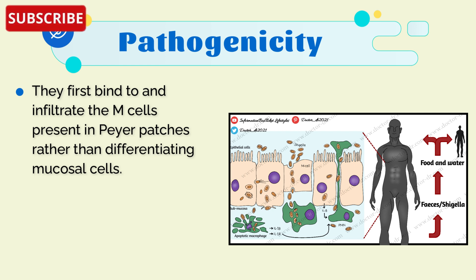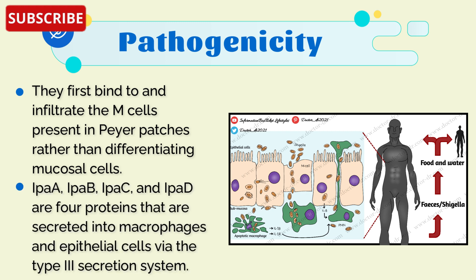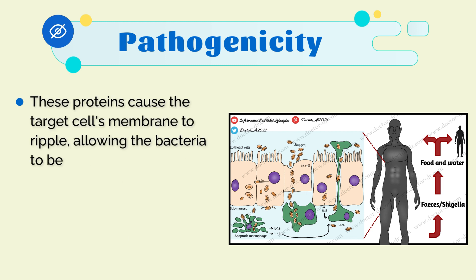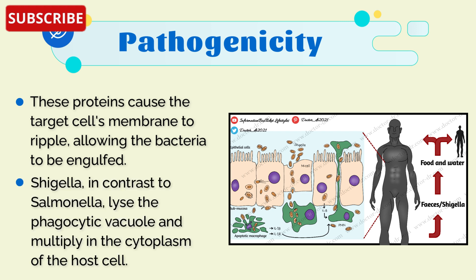Therefore, the plasmid's existence does not guarantee that genes are functioning. They first bind to and infiltrate the M cells present in Peyer's patches rather than differentiating mucosal cells. IpaA, IpaB, IpaC, and IpaD are four proteins secreted into macrophages and epithelial cells with the help of the type 3 secretion system.